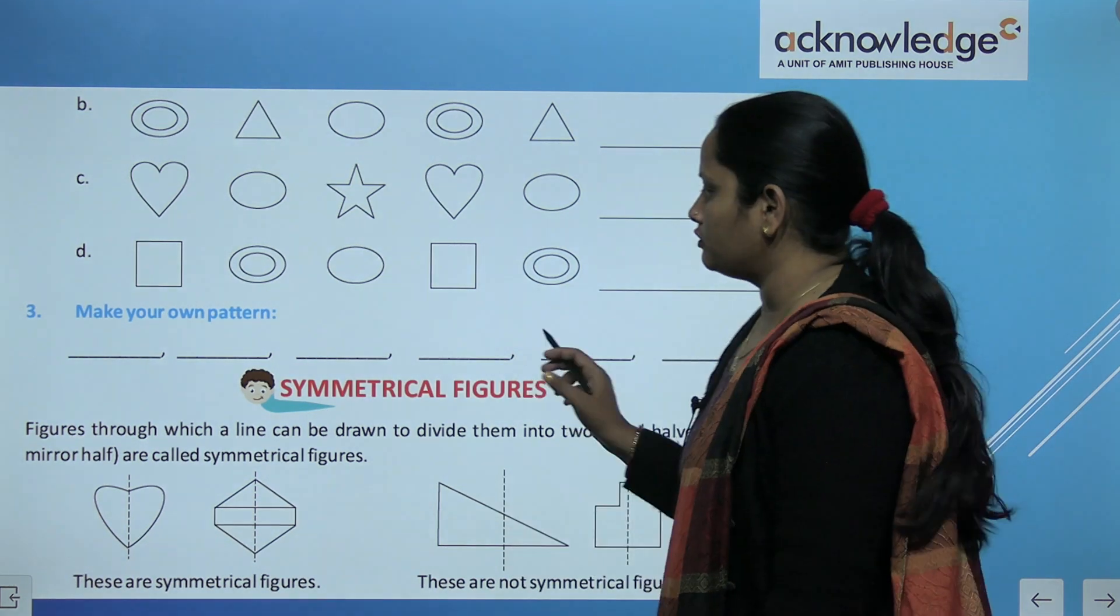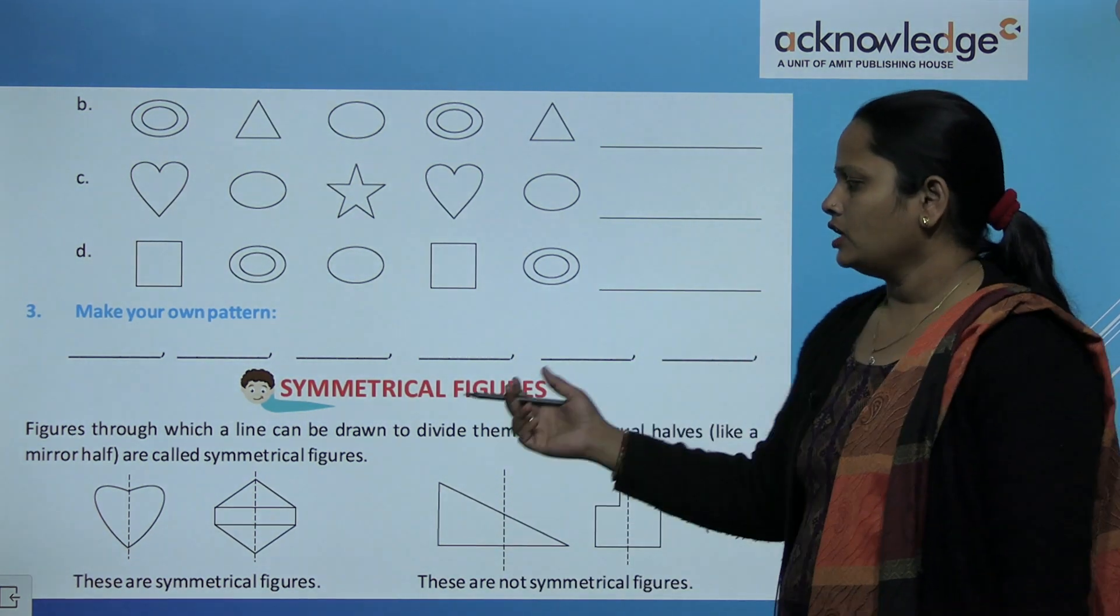See the pattern below and can you tell what comes later. Pattern ko dekhna hai aur batana hai what will come next. So oval, then this shape, then star. Again there will be a star. Clear? Make your own patterns. Here you have to make any of your own patterns that you like.